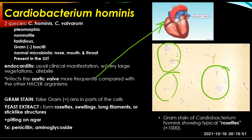Cardiobacterium hominis — the genus has two species: hominis and valvarum. Both are pleomorphic, non-motile, fastidious, gram-negative bacilli found as normal microbiota of the nose, mouth, and throat, and may be present in the GI tract. Oral infections or dental procedures usually precede endocarditis. The usual clinical manifestation is endocarditis often with very large vegetations.